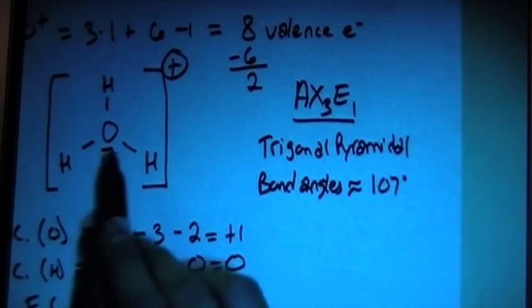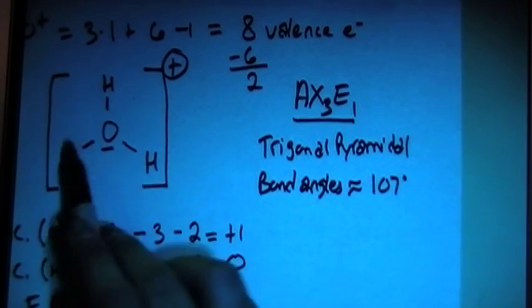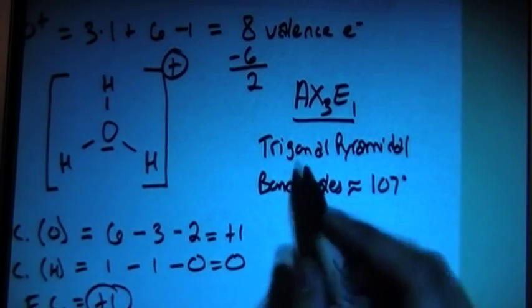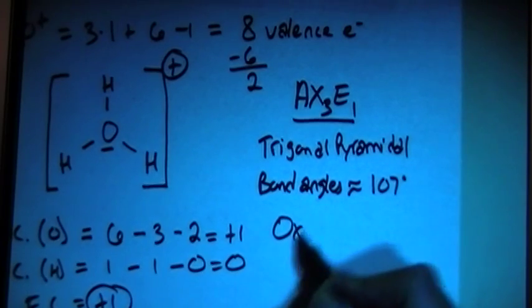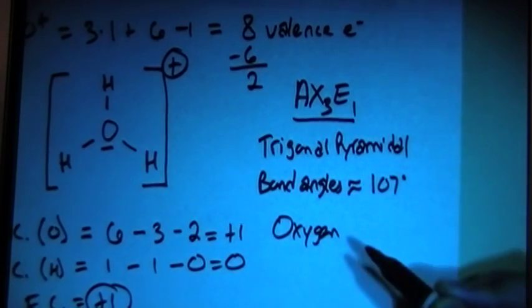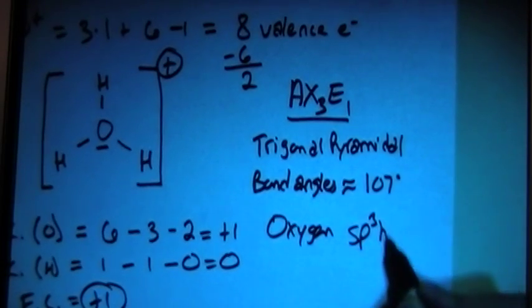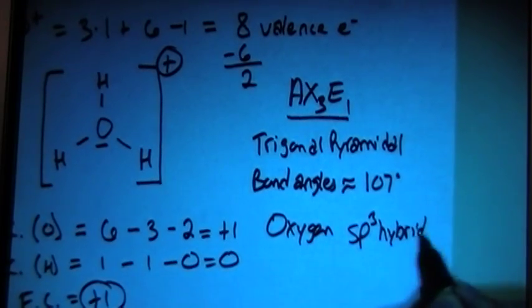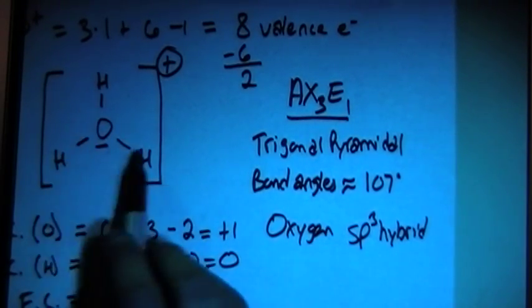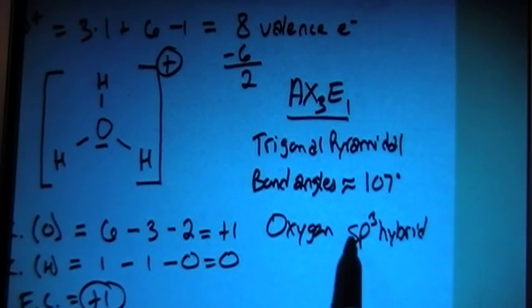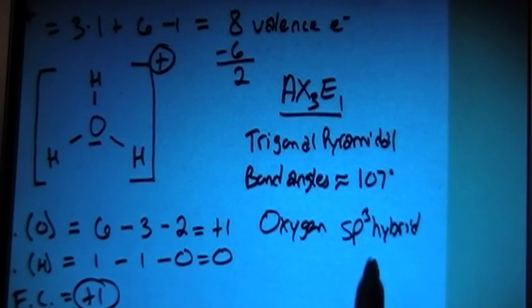Okay? And looking at the oxygen, there's one, two, three, four bonding sites. So that means that the oxygen will be SP3 hybridized, because there's one, two, three, four bonding sites, so SPPP. Three P is one S, four orbitals, SP3 hybrid.